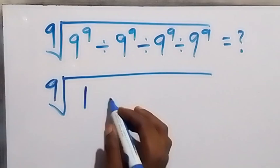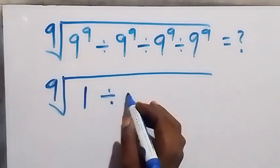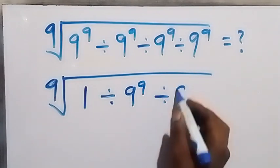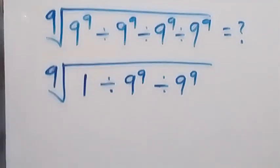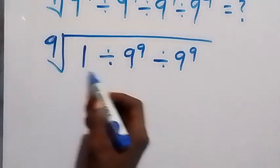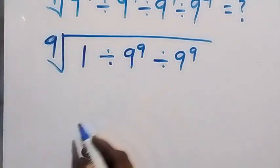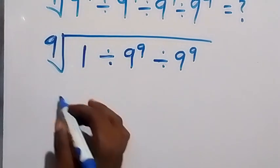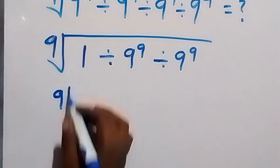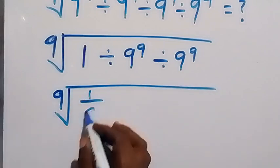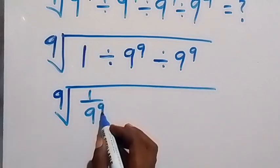Then we have divided by also 9^9, then divided by 9^9. So we handle the next one: that is 1 divided by 9^9. Then we can write that again as ninth root of 1 over 9^9, which is divided by 9^9.